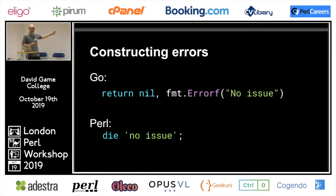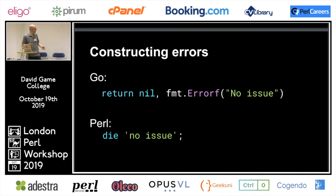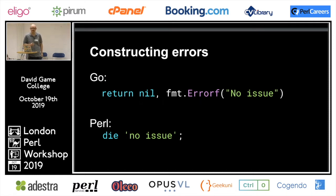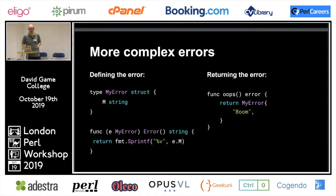In Go you can return nothing for the normal value but return an error. In Perl we can return errors too — we don't have a specific type but you can return or you could die, and die is quite a common way of throwing up errors, basically throwing back a string. We can throw more complex types obviously, and that's true with Go as well.